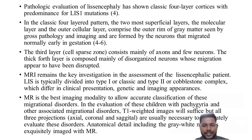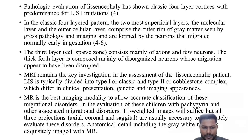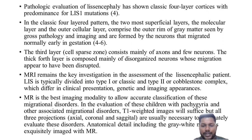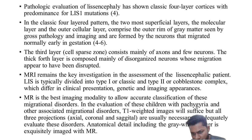MRI remains the key investigation in assessment of lissencephaly patients. Lissencephaly is typically divided into type 1 or classic, and type 2 or cobblestone complex, which differ in clinical presentation, genetics, and imaging appearances. MRI is the best imaging modality to allow accurate classification of this migrational disorder. In the evaluation of children with pachygyria and other associated migrational disorders, T1-weighted images will suffice, but all three projection cuts — coronal, sagittal, and axial — are usually necessary to adequately evaluate this disorder. Anatomical detail including gray matter is best assessed with MRI.